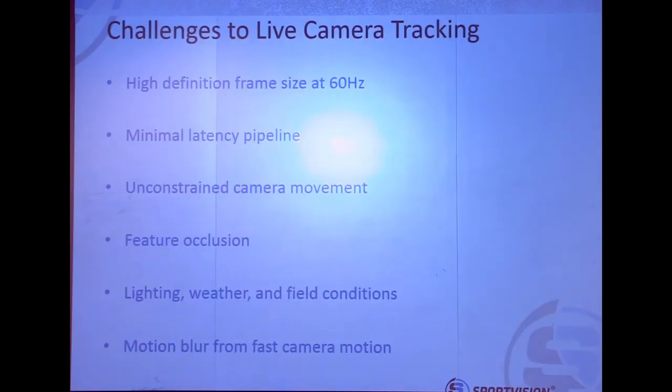The SkyCam or SpiderCam is unconstrained. The traditional First in 10 system operates on a PTZ camera — pan, tilt, and zoom. These aerial cameras have full seven degrees of freedom motion: they can go anywhere they want, look anywhere they want, and zoom in as much as they want. So we need to be able to solve for all of those variables in real time. Another issue with this type of camera is when players or referees occlude the hash marks or sidelines — computer vision can't do very much when someone's in the way.